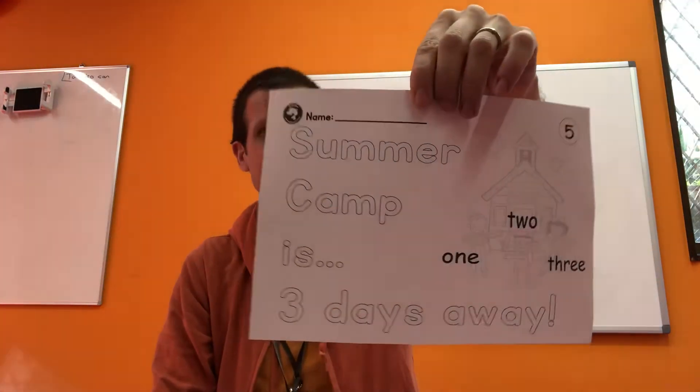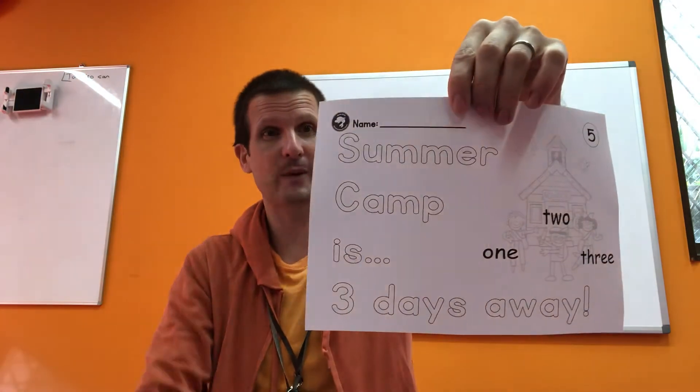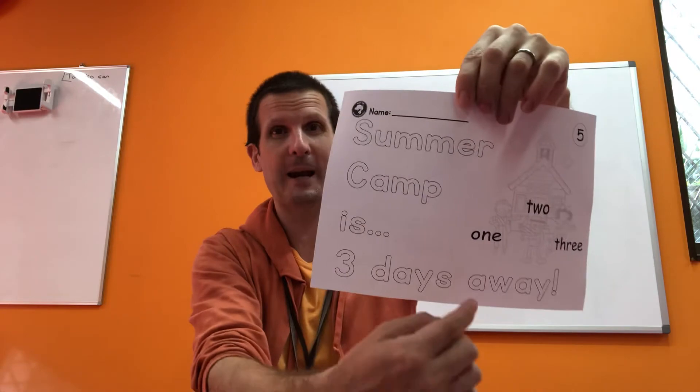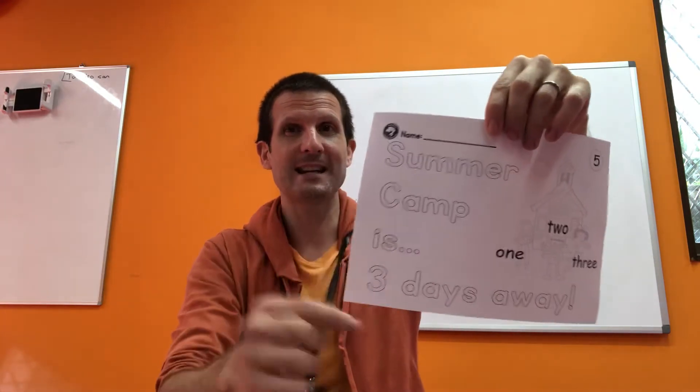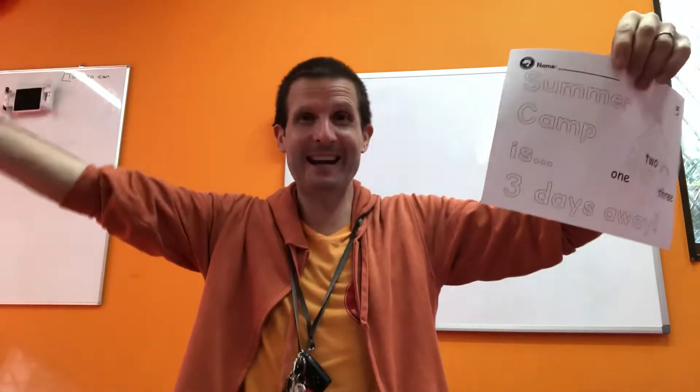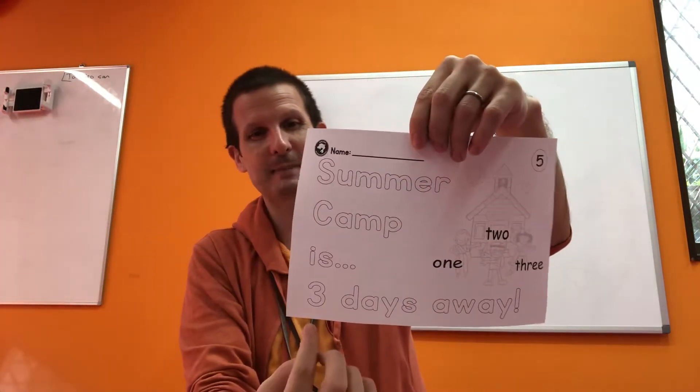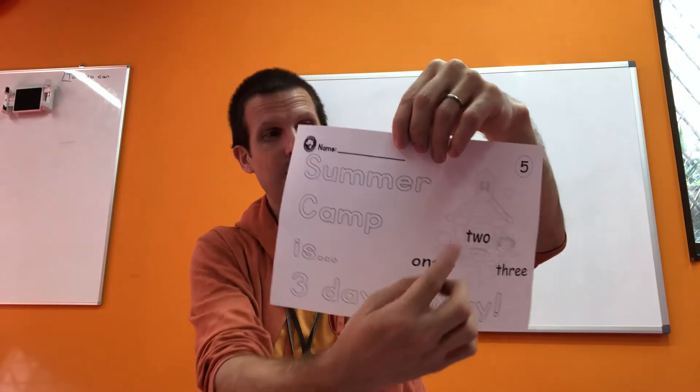And this is number five. Number five, right? It is in three days. So summer camp is three days away. Summer camp is three days away. One, two, three. Just so you can understand the spelling of the numbers as well. One, two, and three.